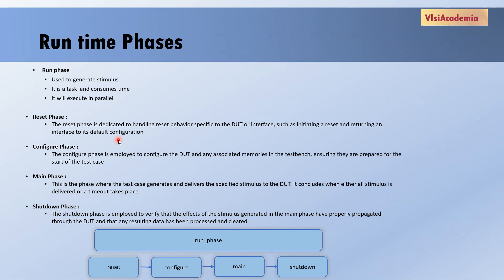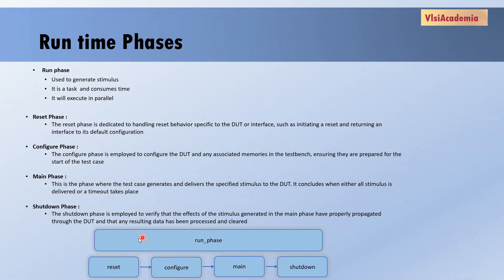Next, we have runtime phases. Runtime phase is the main phase where actual simulation time is consumed. It is basically used to generate stimulus, that is, to generate test cases. Runtime phase is a task and it consumes time. In build time phases, some phases used a top-down approach and some used bottom-to-top, but in runtime phases, all the components will be executed parallelly. Along with this run phase, we have additional phases which run parallel to the run phase.